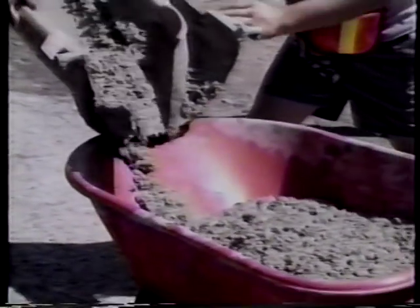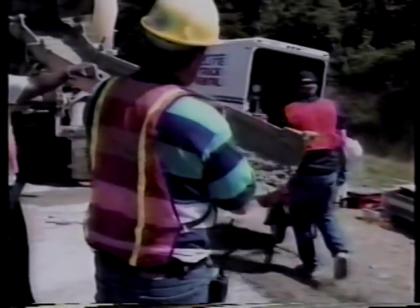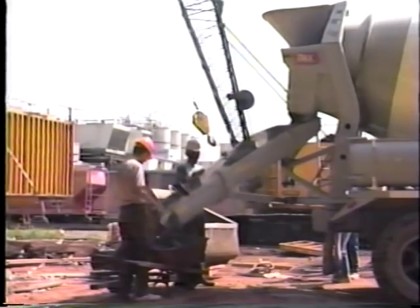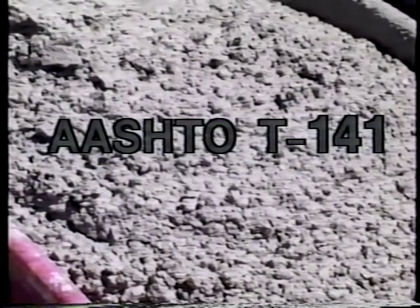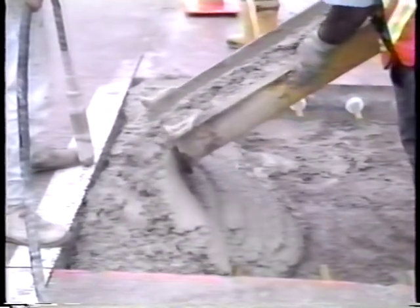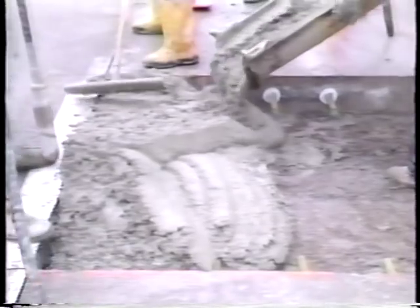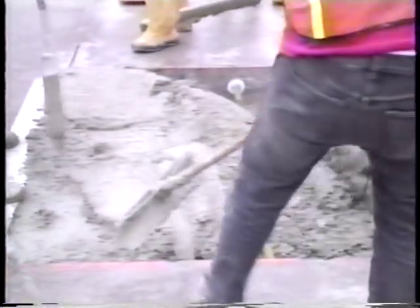Our first topic is sampling. Before any of the tests can be performed, a sample of the concrete is needed — a representative sample. The concrete to be tested has to be typical of the entire truckload. Sampling should be done according to AASHTO designation T141. The basic rule is this: don't take the sample from the beginning or end of the discharge. Take it from the first one-third of the discharge, but never from the first two cubic feet.